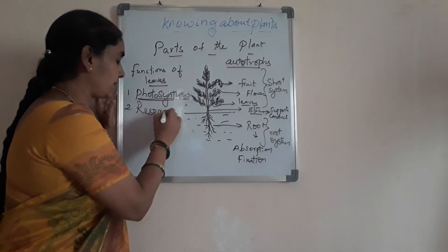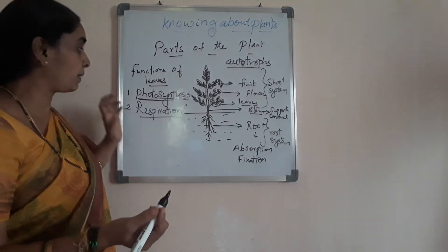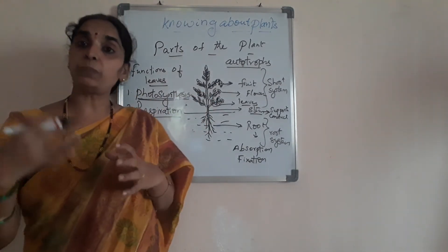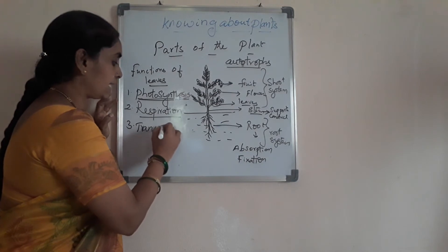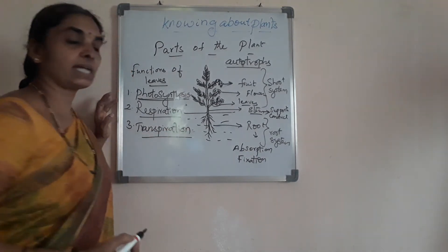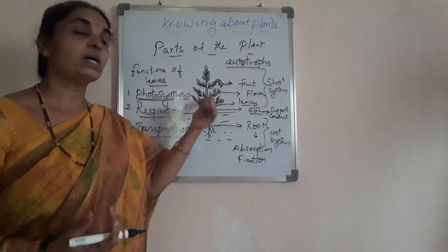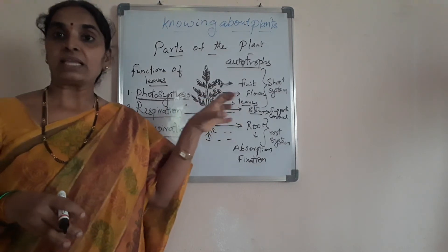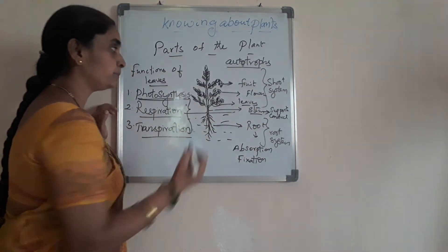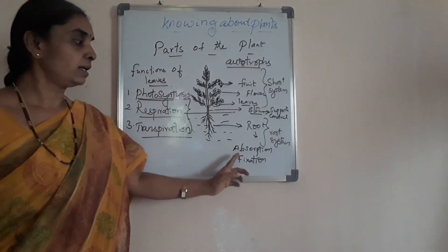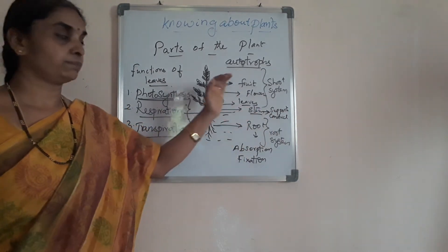Another function of the leaves is respiration. The exchange of gases — taking in carbon dioxide and releasing oxygen — also takes place through the leaves. The next function of the leaf is transpiration. Excess water from the plant is released out through the stomatal pores present in the leaves. So transpiration is the removal of excess water from the plant, and it is carried out by the leaves.